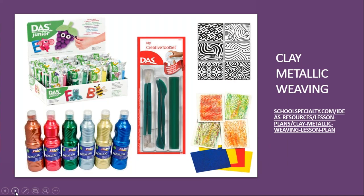Here are some of the products used. We have the DAS Junior clay and the creative tools, as well as some rubbing plates — the top ones are from Jack Richardson and the bottom set is from Royal Co. Lastly, on the bottom left, we have the Prang metallic tempera paint that I gently rubbed on top of the clay to give it that metallic sheen.